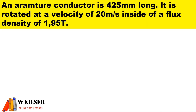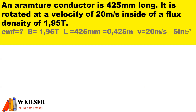An armature conductor is 425 millimetres long. It is rotated at a velocity of 20 metres per second inside a flux density of 1.95 Tesla. To convert length from millimetres to metres, we divide by 1,000, giving us 0.425 metres. We have a velocity of 20 metres per second.